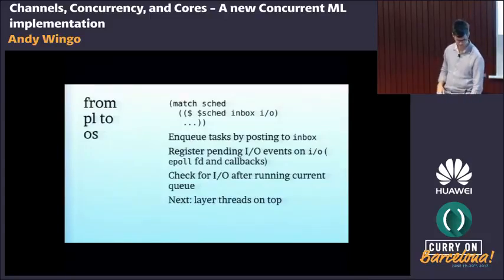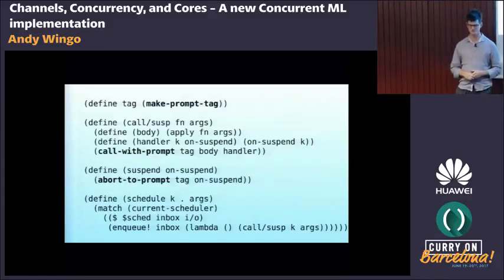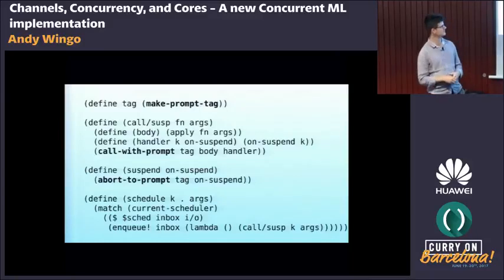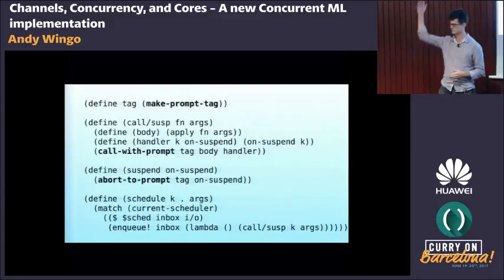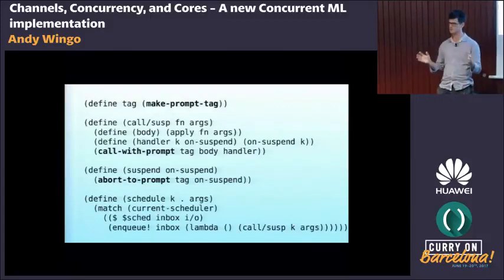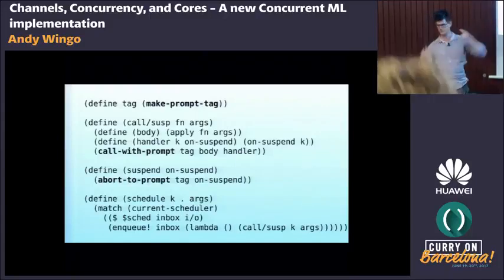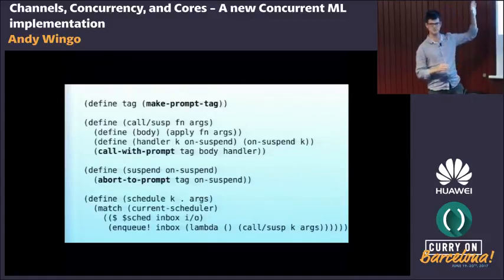How many of you have worked in languages that have delimited continuations? Maybe about five. The primitives you need — and they really are primitives your system should support — are `call-with-prompt` and `abort-to-prompt`. There are other formulations like shift/reset, but these are the ones I prefer; these are what Racket and Guile are based on.